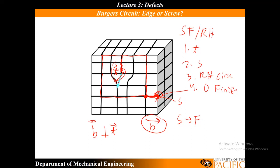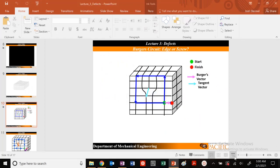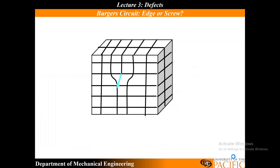You can see this a little bit nicer in the following diagram. So I'll do it again. This is my selection of my tangent vector out of the board. This is my start. Again, I'm counting spaces and jumps: 1, 2, 3, 4. Next — 1, 2, 3, 4. Next — 1, 2, 3, 4. Next — 1, 2, 3, 4. My start to finish — that's my Burgers vector. Excellent.